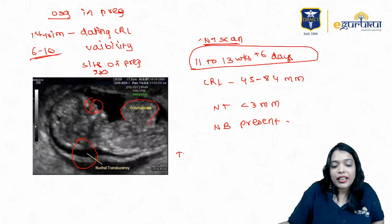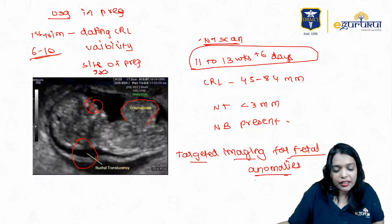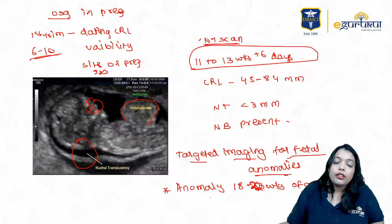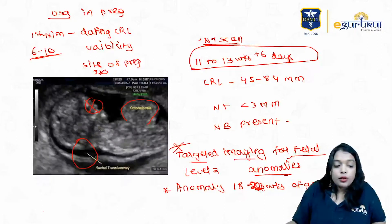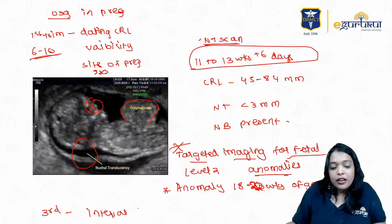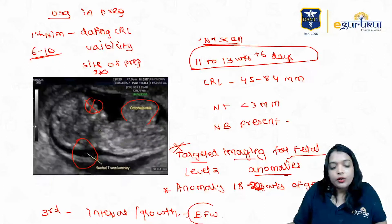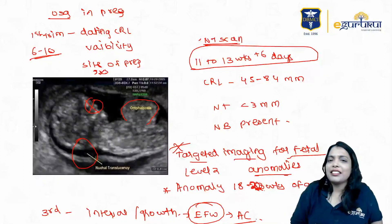The most important scan in pregnancy is the TIFA scan — Targeted Imaging for Fetal Anomalies. It is usually done between 18 to 20 weeks, up to 22 weeks. Almost all anomalies are picked up in this TIFA scan, also called the anomaly scan or Level 2 targeted scan. In the third trimester, the interval or growth scan is done to assess fetal growth and estimate fetal weight, measured using abdominal circumference.